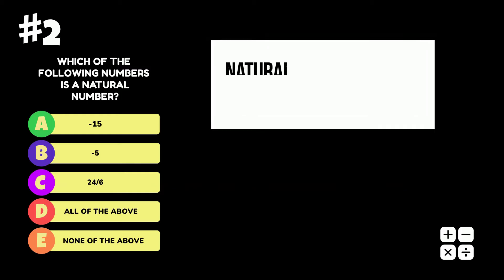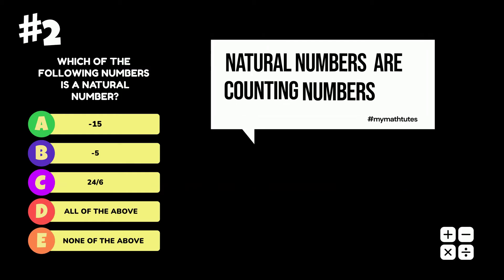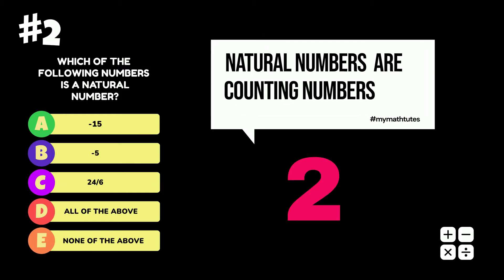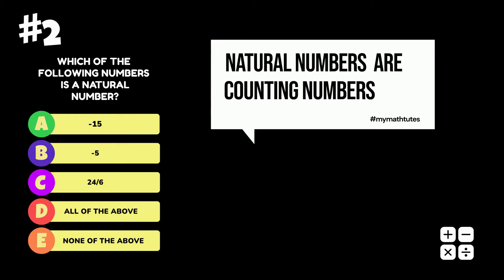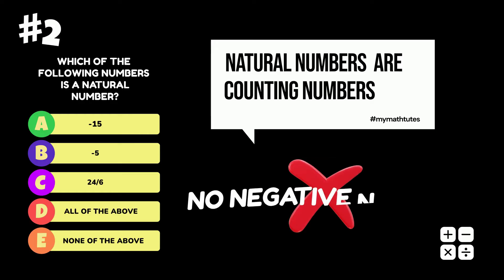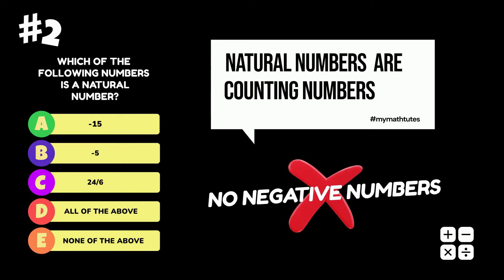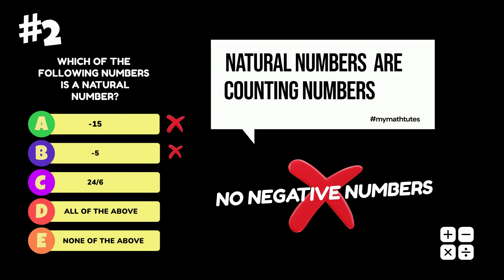Natural numbers are counting numbers, for example, 1, 2, 3, 4, and so on. They do not include negative numbers, so we can disregard options A, B, and D. This leaves us with options C and E.